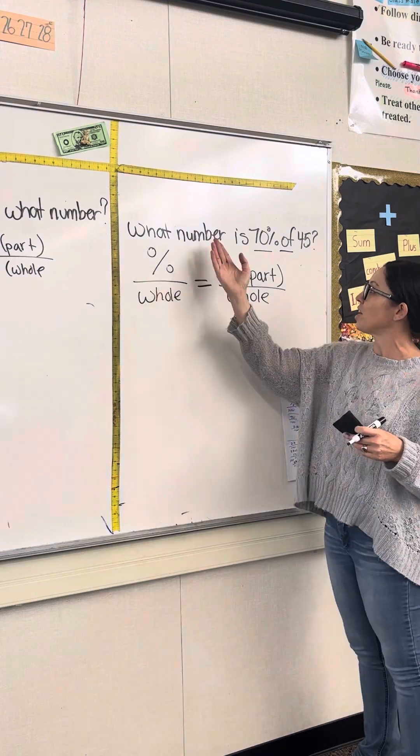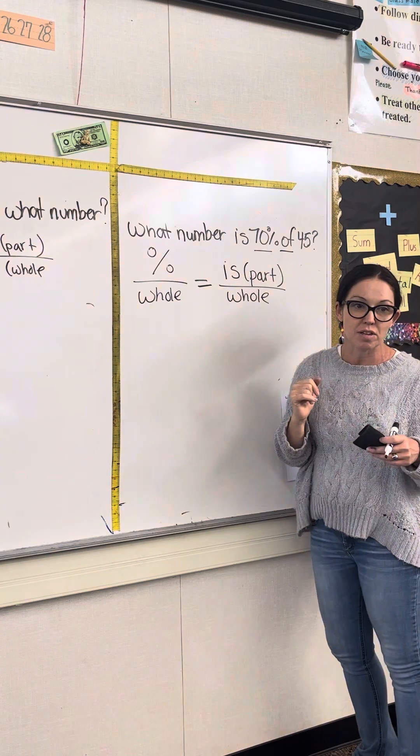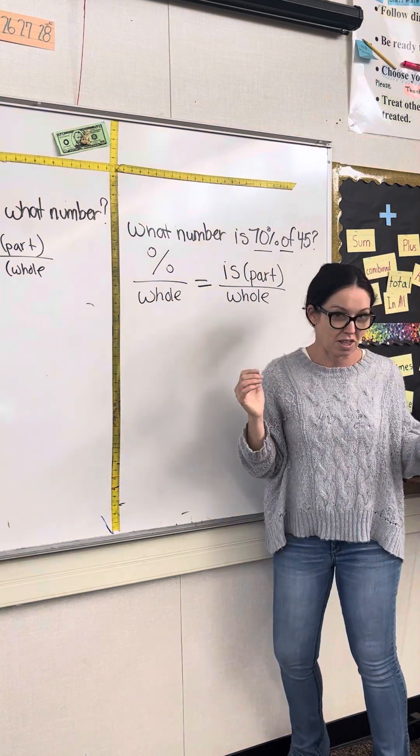So when we're looking at a problem like what number is 70% of 45, we want to think about how we can set that up using a proportion.